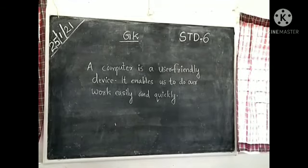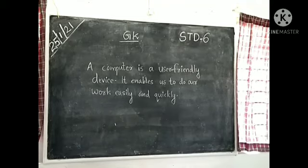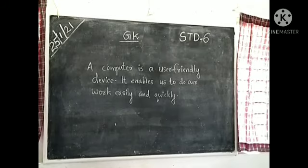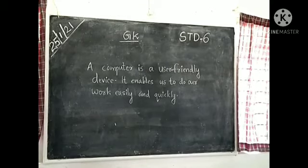Last question, eleventh: a group of binary digits or bits treated as a unit is called Byte. Eight bits make one Byte. The last one is Byte — B-Y-T-E.